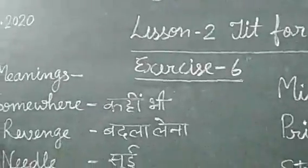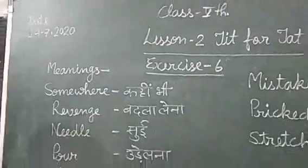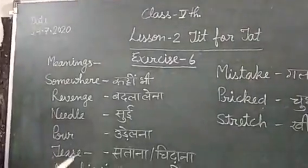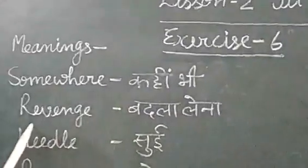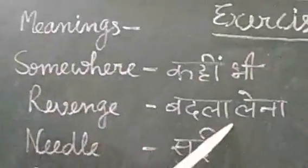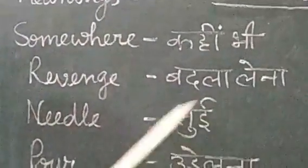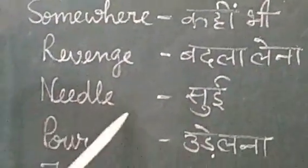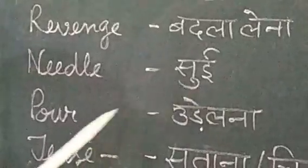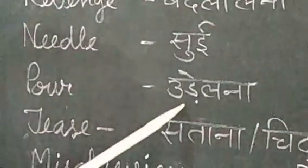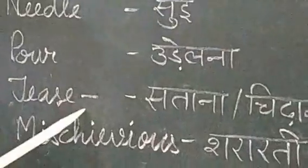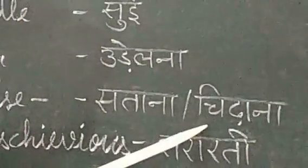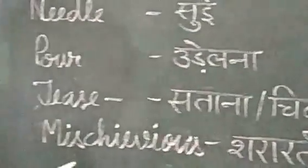Exercise says meanings — there are some meanings of this lesson. Some where: 'Kashu' means 'badla dhena ya badla' (revenge); 'needed' means 'sui' (needle); 'poor' means 'uldhenna'; 'chira dhena'; 'teeth sakana ya chirana' means 'mysterious'.